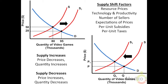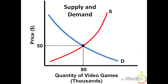Fifth, expectations of future prices on the part of producers — a decrease in future price expectations will shift supply to the right in the present. Sixth, alternative output price changes — a decrease in the price of a good that uses the same resources will shift supply to the right. Remember: when the price increases or decreases for a good, that just leads to a point-to-point movement along the demand or supply curve.